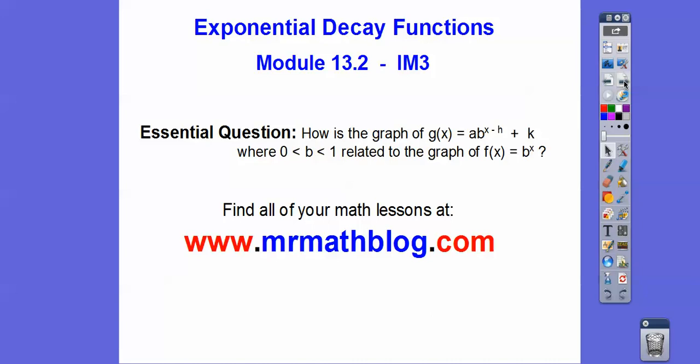So exponential decay functions are the exact same technique as exponential growth functions. So I'm going to be doing some reviewing. How's the graph of A times B to the X minus H plus K related to the graph of f(x) equals B to the X? Now here, B is a fraction or a decimal. A could be positive or negative, could be a fraction or a decimal. But decay is when this is less than 1, when B is less than 1. Growth is when it's greater than 1.